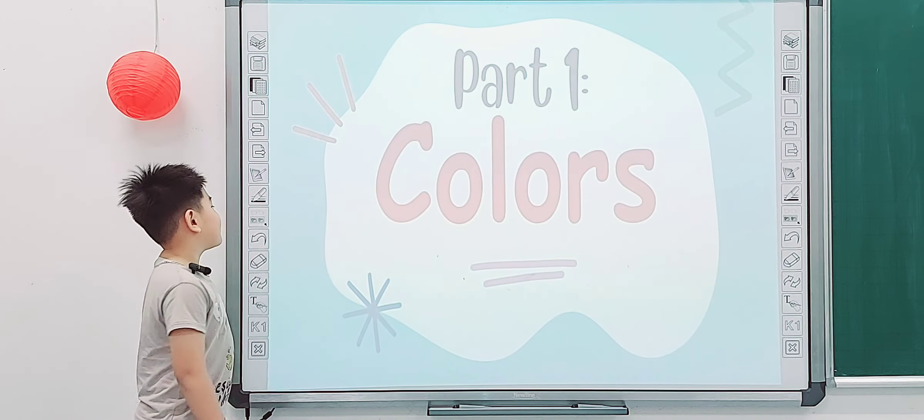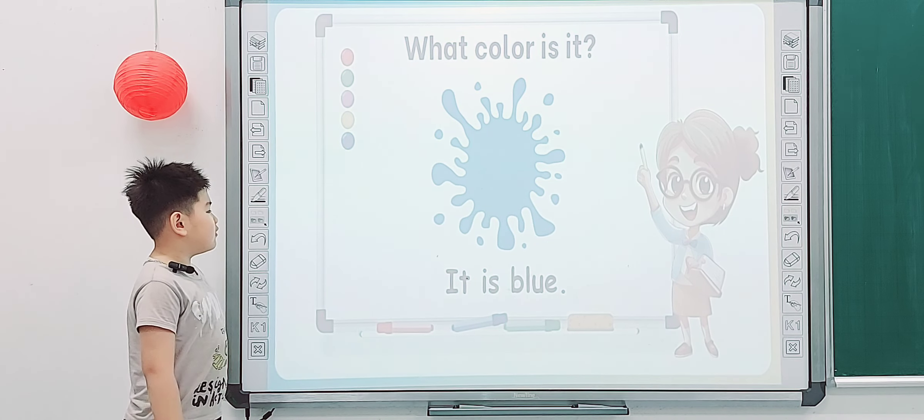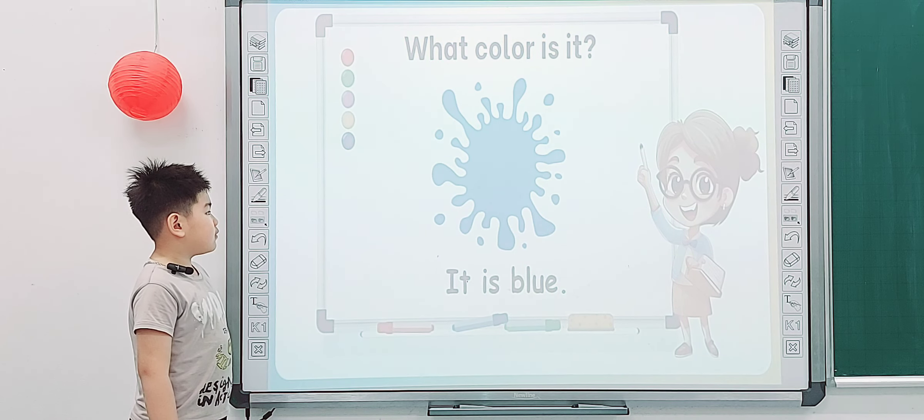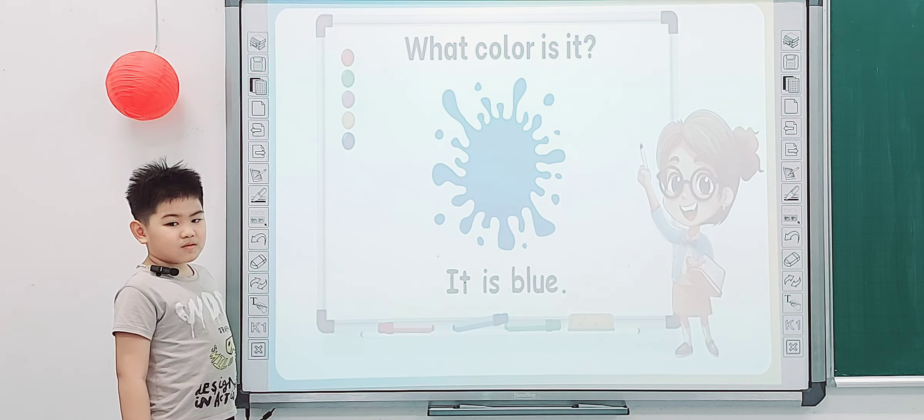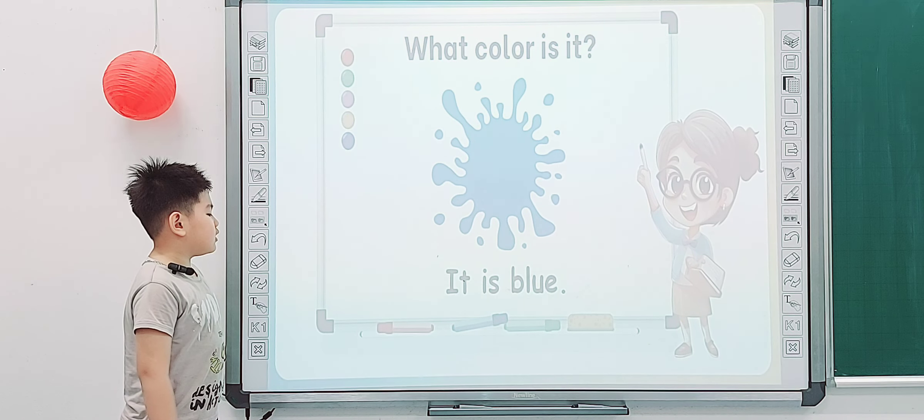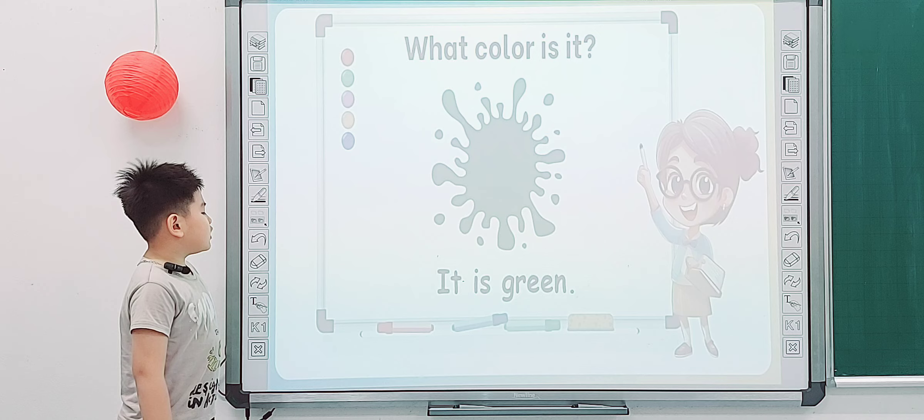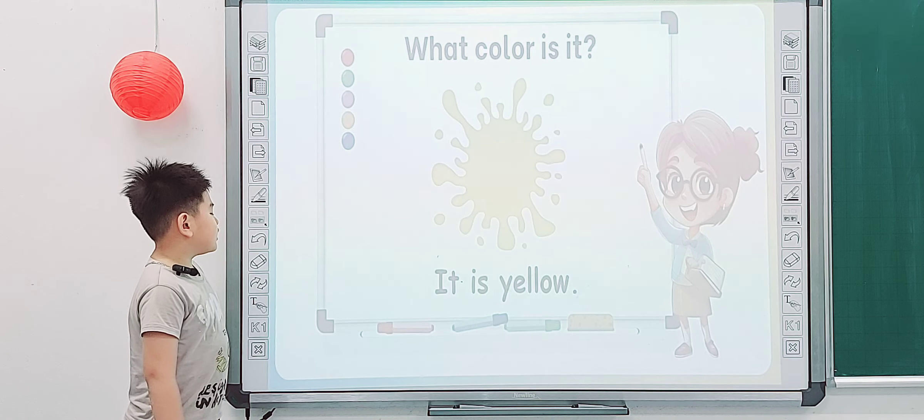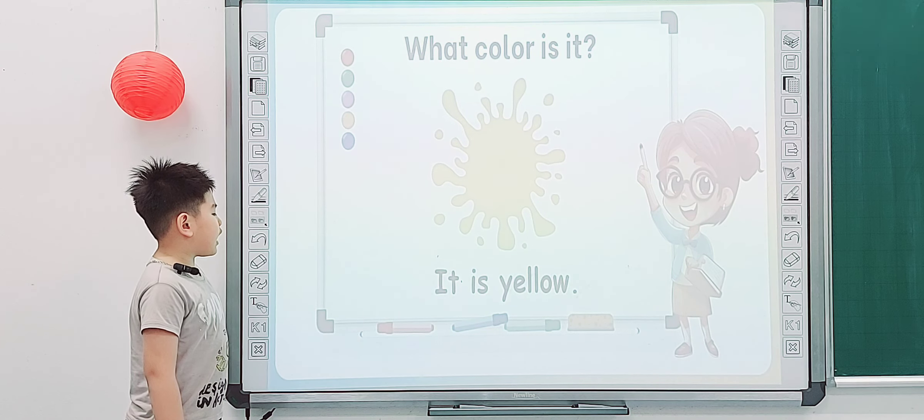And look at the screen, part one colors. Tell me, what color is it? Blue. It is? It is blue. And what color is it? It is green. And what color is it? It is yellow.